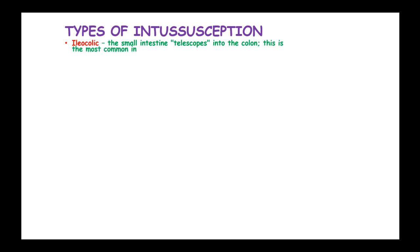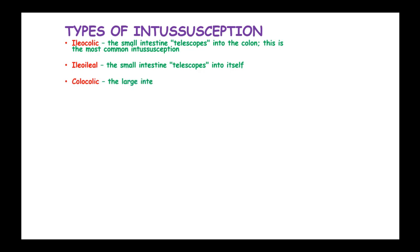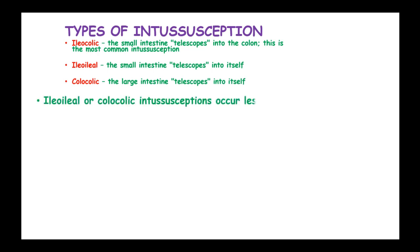There are types of intussusception. We have ileocolic, where the small intestine telescopes into the colon, and this is the most common type. The next is ileo-ileal, where the small intestine telescopes into itself, and we have colocolic, where the large intestine telescopes into itself. Ileo-ileal and colocolic intussusceptions occur less frequently than ileocolic intussusception.